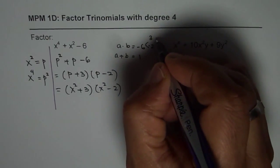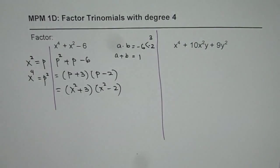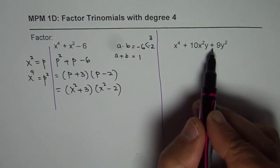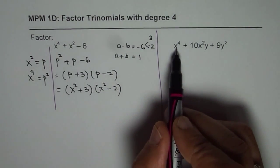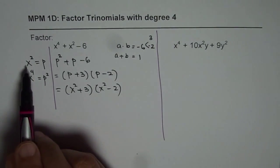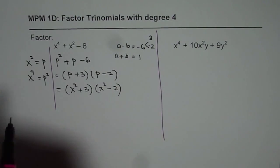Now let's do the next one. Here, again we have a similar situation: x⁴ + 10x²y + 9y². So let's substitute x⁴ as p² and x² as p. We are using the same substitution.